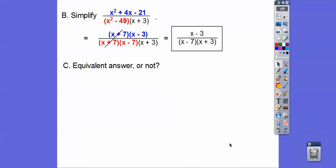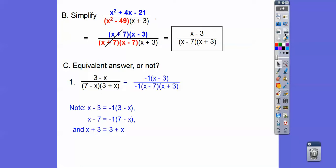So are these equivalent or not? Is this expression equivalent to this expression right here? Remember, 3 minus x is negative 1 of x minus 3, and x minus 7 is negative 1 of 7 minus x. And then when you're adding, just think of a number. 3 plus 2 is the same as 2 plus 3. So when you're adding, they're the same. So these are the same of each other, but this is negative 1 of this, and this is negative 1 of this. So let's go ahead and put that in there.